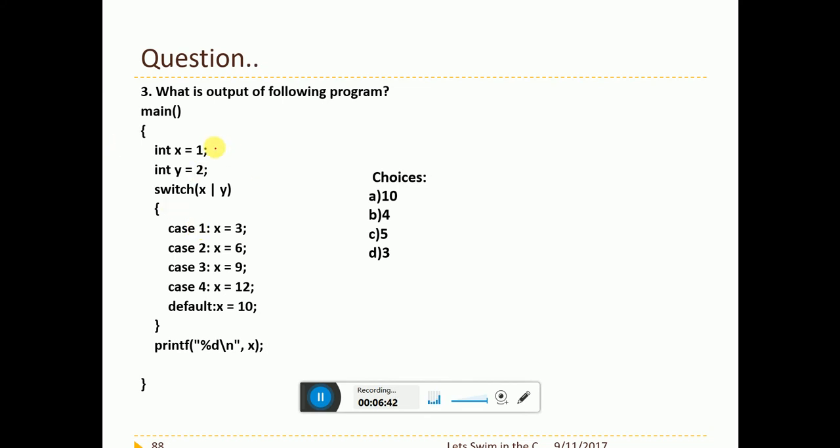Now, X is equal to 1. Y is equal to 2. Switch X OR Y. This is bitwise OR. Please remember this. This is bitwise OR. Now logical OR is different from bitwise OR. I have already taught you this in the previous sessions. Now 1 bitwise OR 2. It will be true anyways. So it will come inside.